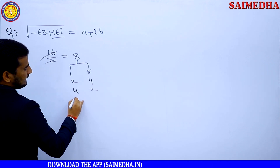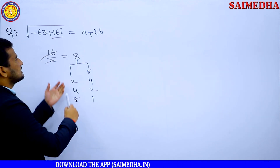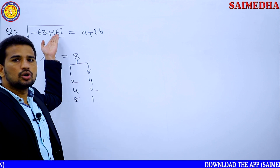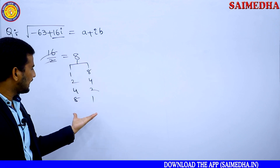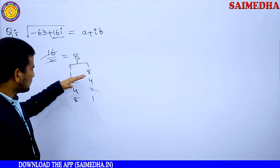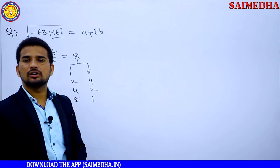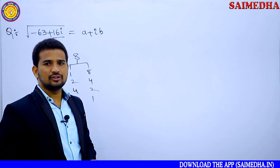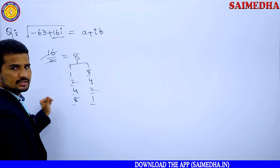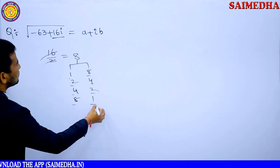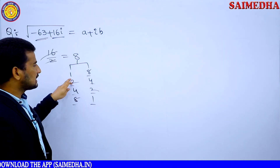So the technique is: take the imaginary term coefficient, divide it by 2 to get 8, then write the different factor pairs for 8. The answer will be among these options. To identify the correct one, there is one more logic: the square difference of whichever factor pair you choose must equal -63. Let us check: 1² = 1, 8² = 64, so 1 - 64 = -63. That's our target value.